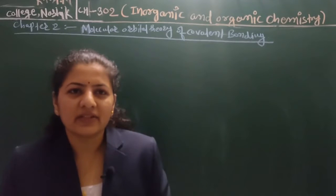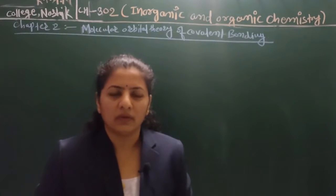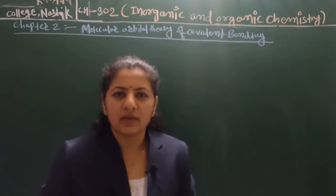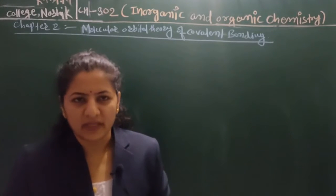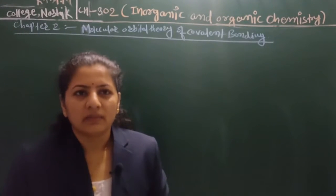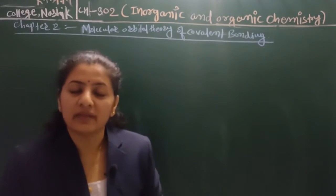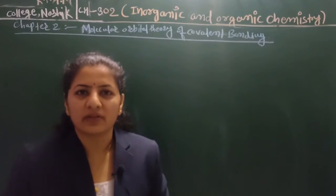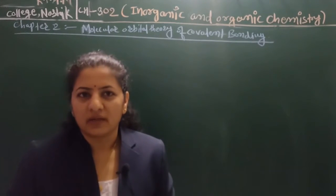Welcome to the lecture. In this lecture we are going to discuss O2 minus, O2 plus, O2 2-minus ions respectively. These are all oxygen compounds including peroxide and superoxide. We are going to discuss the magnetic nature of these with respect to the oxygen molecule.